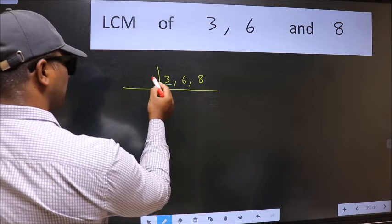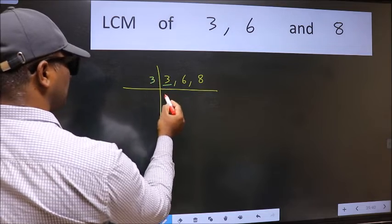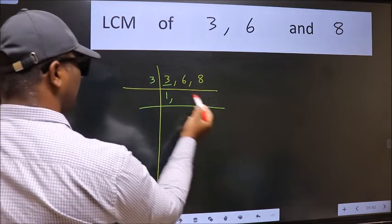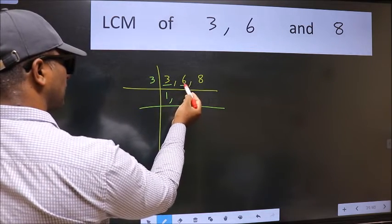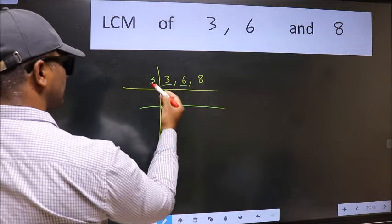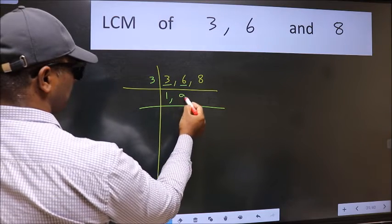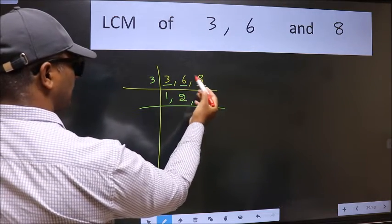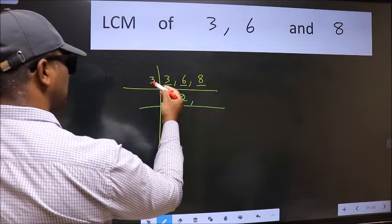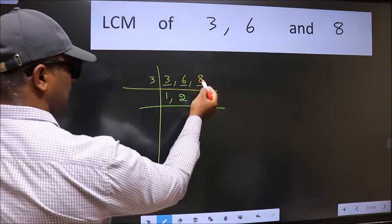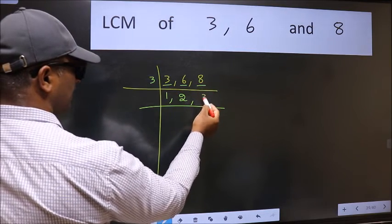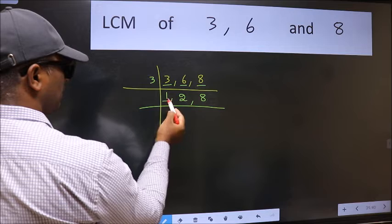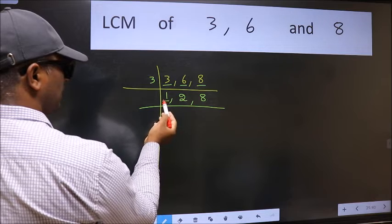3 is a prime number, so 3 wants 3. The other number 6 — when do we get 6 in the 3 table? 3 times 2 is 6. The other number 8 is not divisible by 3, so we write it down as it is. Now we got 1 here.